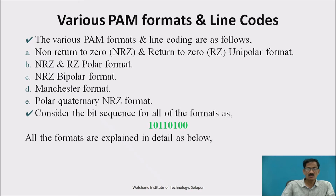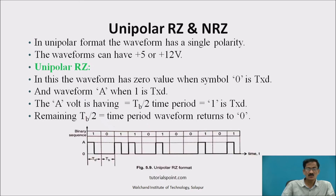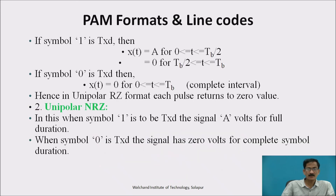Consider the symbol sequence 1 0 1 1 0 1 0 1 0 0. For unipolar return-to-zero, the voltage level is fixed to +5 or +12 volts for symbol 1. The waveform has zero value when the symbol is 0, and amplitude A when 1 is to be transmitted for a width of TB/2. So symbol 1 is transmitted by magnitude A for half the period TB/2, and the remaining TB/2 returns to zero.